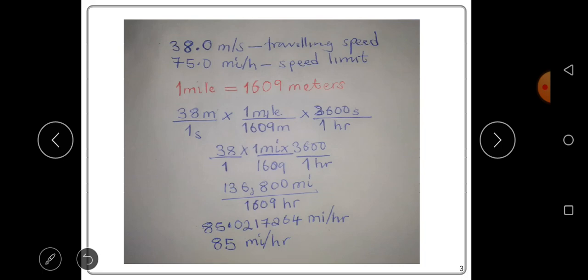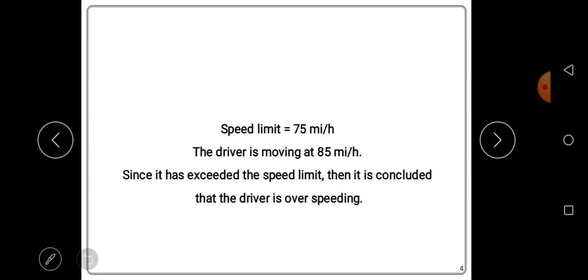The speed limit is 75 miles per hour, and the driver is moving at 85 miles per hour. Since the driver is moving at a higher speed than the speed limit, we can see that the driver has exceeded the speed limit by 10 miles per hour. We can conclude that the driver is overspeeding.